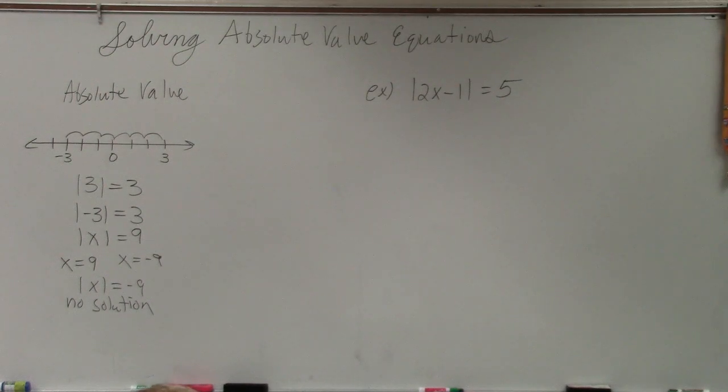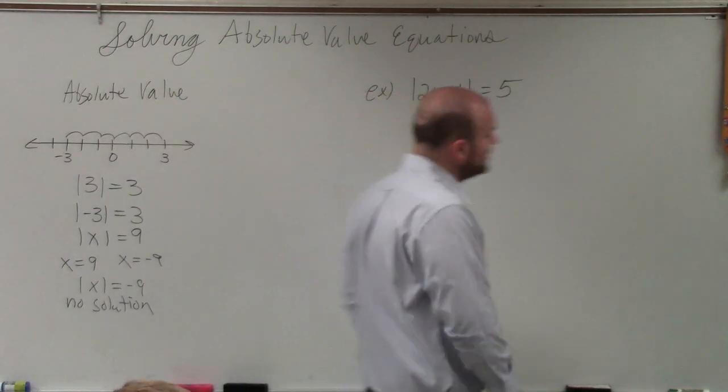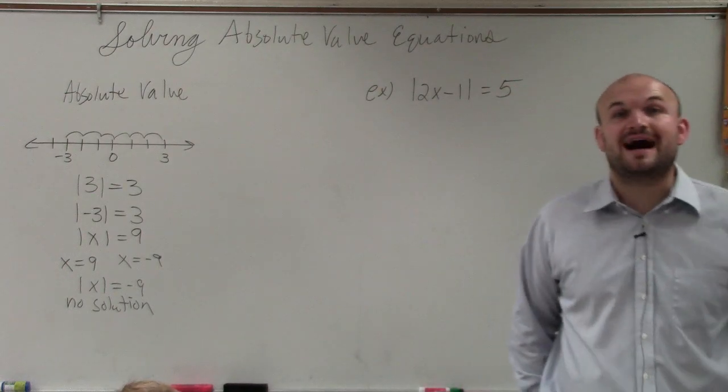OK, I'll go ahead and get started. So we have the absolute value of 2x minus 1 is equal to 5.